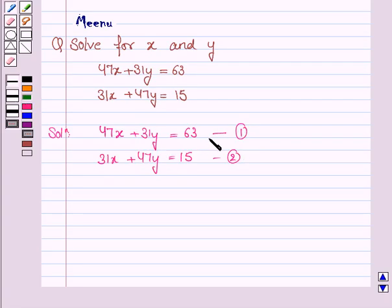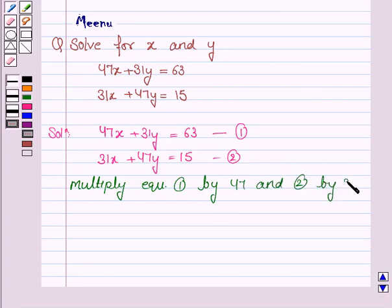Now we'll solve the system of equations by equating the coefficient of x or y, and here we'll be equating the coefficient of y. So to equate the coefficient of y, we'll multiply equation 1 by 47 and equation 2 by 31, and also subtract equation 2 from equation 1.